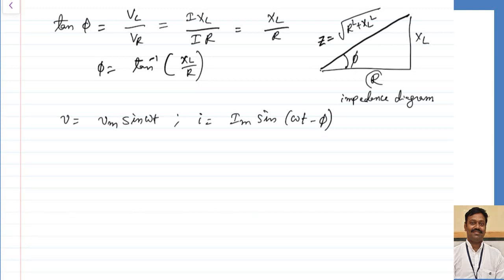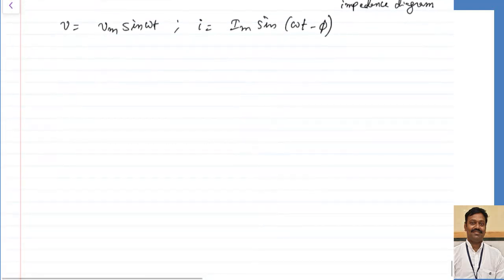From the impedance diagram, as the value of resistance decreases while XL remains constant, the angle will go on increasing. If R equals zero, XL will be fully vertical and the angle will be equal to 90 degrees. This means the ratio of R and XL decides what is the angle between voltage and current.